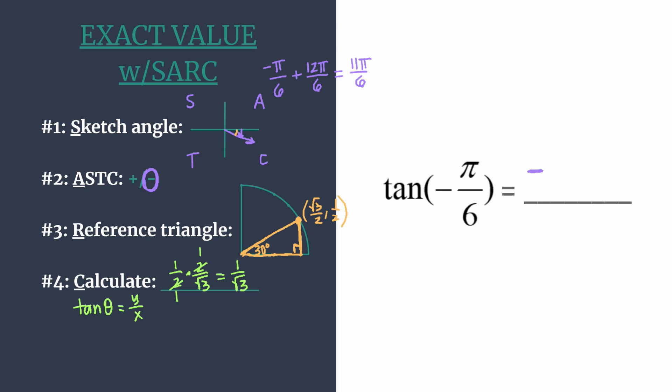We want to rationalize this. Multiply by √3 over √3 to deal with the radical in the denominator. That simplifies to √3 over 3. That's our value. We know it's negative since we're in the fourth quadrant, so tangent of negative π over 6 is negative √3 over 3.